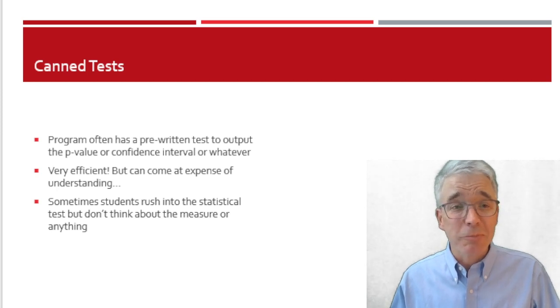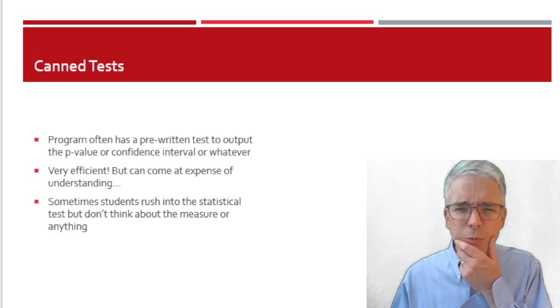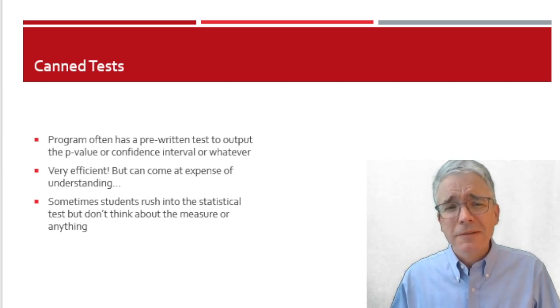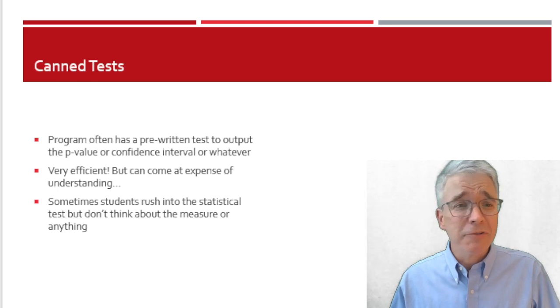And the computer's even better than you or me at plug and chug. At no stage will the computer go, oh, that's kind of weird. R has plenty of canned tests for t-tests and chi-squared and all the rest of them, but I'd be very cautious about using those tests too early in your journey. Shortcuts can end up taking longer.